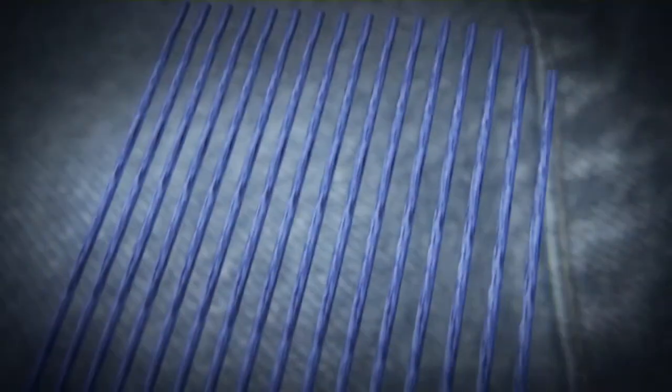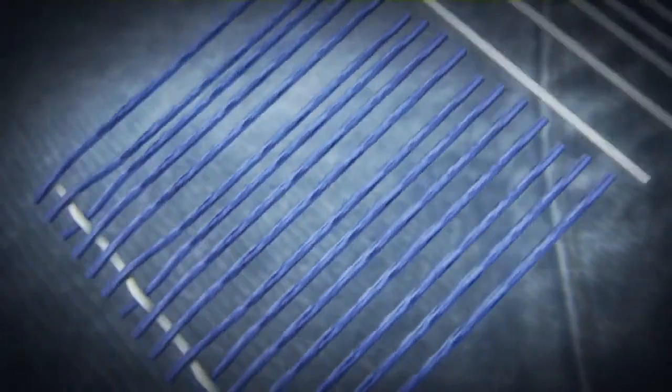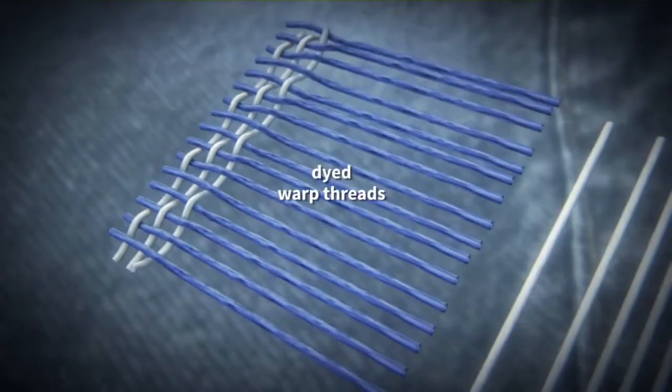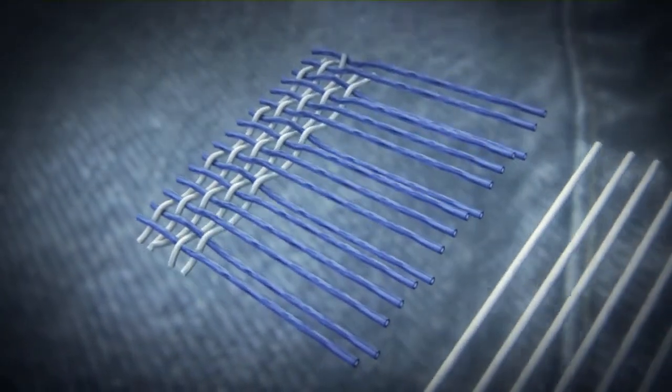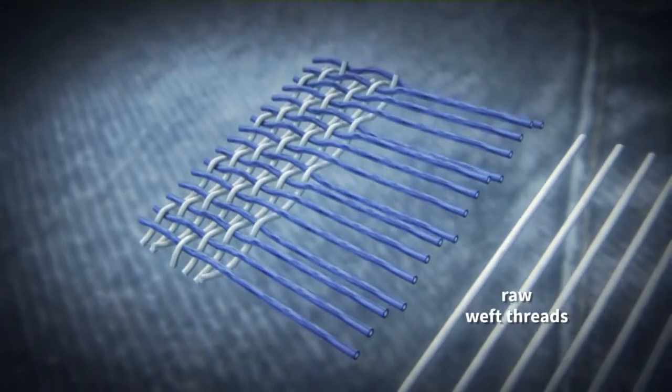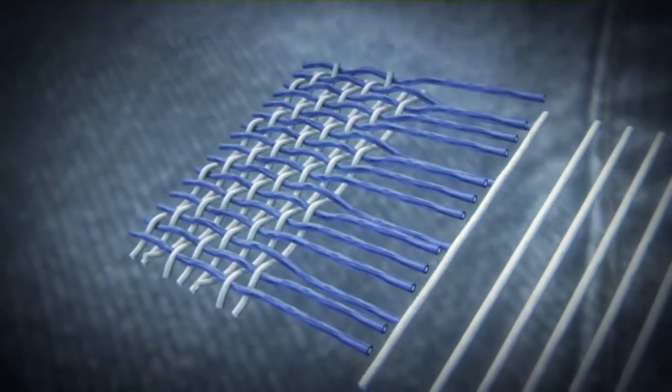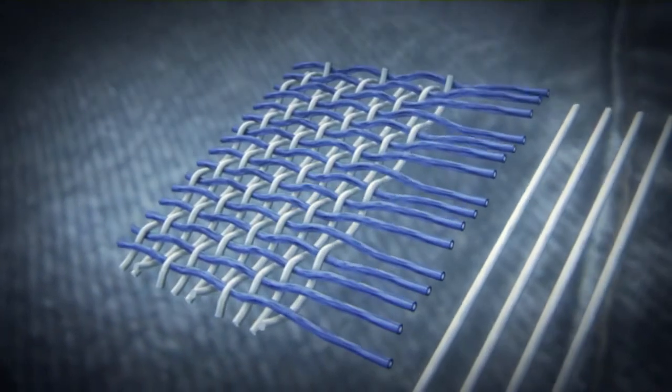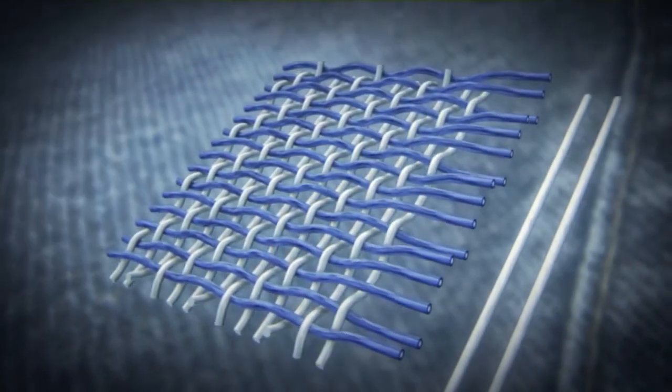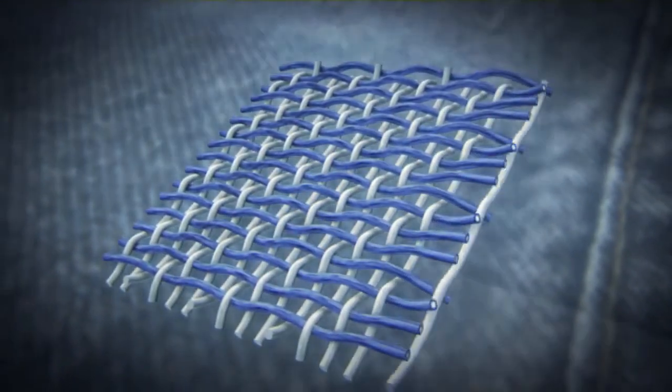This becomes apparent when we consider the type of weaving, which gives denim fabric its characteristic look. The dyed warp threads run lengthwise and the raw weft threads run transversely across them from side to side. Most of the colored warp threads are visible on the outside, while the white weft threads face inwards.